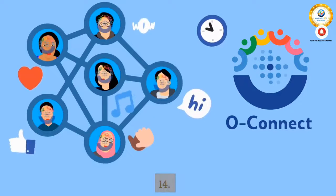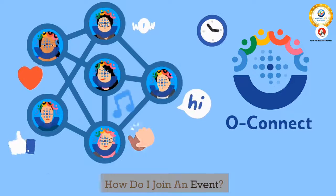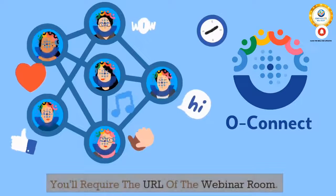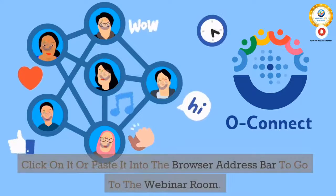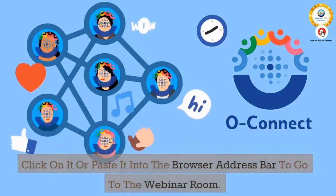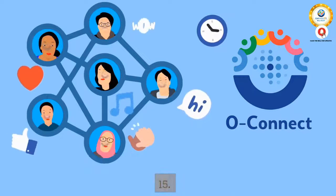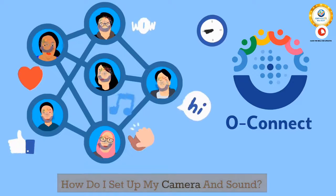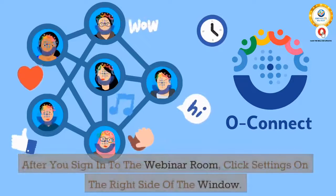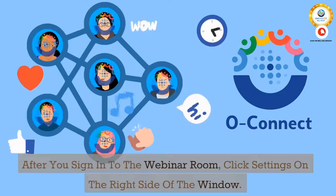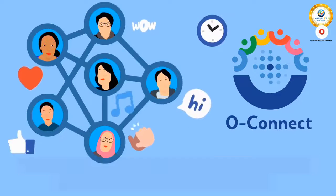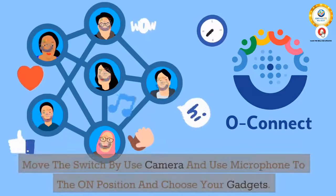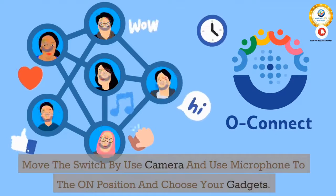14. How do I join an event? You will require the URL of the webinar room. Click on it or paste it into the browser address bar to go to the webinar room. 15. How do I set up my camera and sound? After you sign in to the webinar room, click settings on the right side of the window. Move the switch by "use camera" and "use microphone" to the on position and choose your devices.